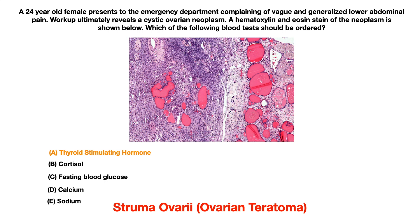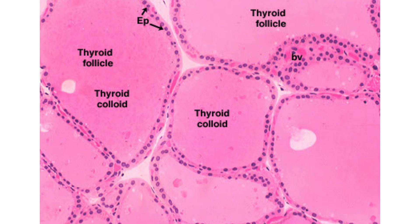When you see thyroid tissue, you want to be able to identify the colloid, the follicles, and the surrounding cells. This is just a brief refresher for your histology class, but it is going to be important on USMLE and COMLEX.